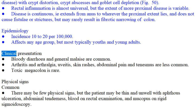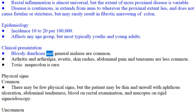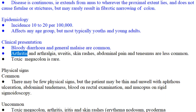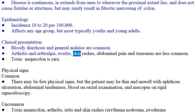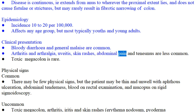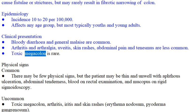Clinical presentation: Bloody diarrhea and general malaise are common. Arthritis and arthralgia, uveitis, skin rashes, abdominal pain, and tenesmus are less common. Toxic megacolon is rare.